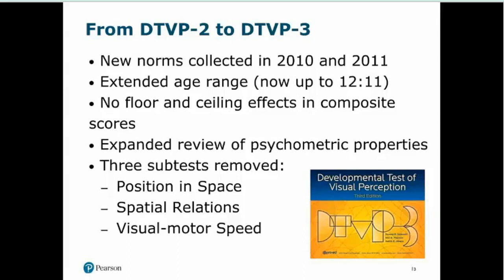One of the universal difficulties with visual perception assessments is their reliability. As part of the psychometric review, three subtests were removed — position and space, spatial relations, and visual motor speed — because they couldn't provide the required level of reliability and validity. Unfortunately, two of those were among the most widely used subtests. So we no longer have those spatial relationship items in this version.